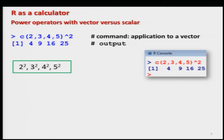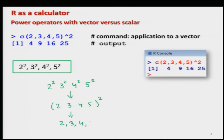First, let me take the power operator. For example, suppose I want to find the value of 2 squared, 3 squared, 4 squared, 5 squared, and so on. I can write 2, 3, 4, 5 and take the square outside. In R, this can be written as C(2, 3, 4, 5) with the power operator — either hat 2 or double star 2.